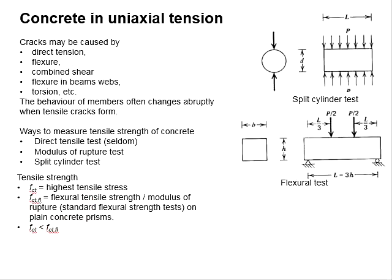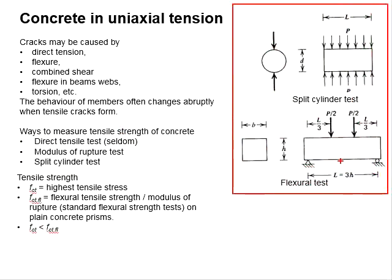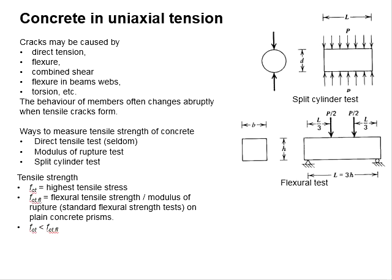In simpler terms, the most accurate way to determine the tensile strength of concrete is the direct tensile test. However, it is difficult to conduct, and therefore it is seldom applied. With that, it is more commonly tested in an indirect manner, such as the flexural test and splitting cylinder test. Based on the results obtained from these tests, through some calculations and conversions, we are able to predict the tensile stress of the concrete.